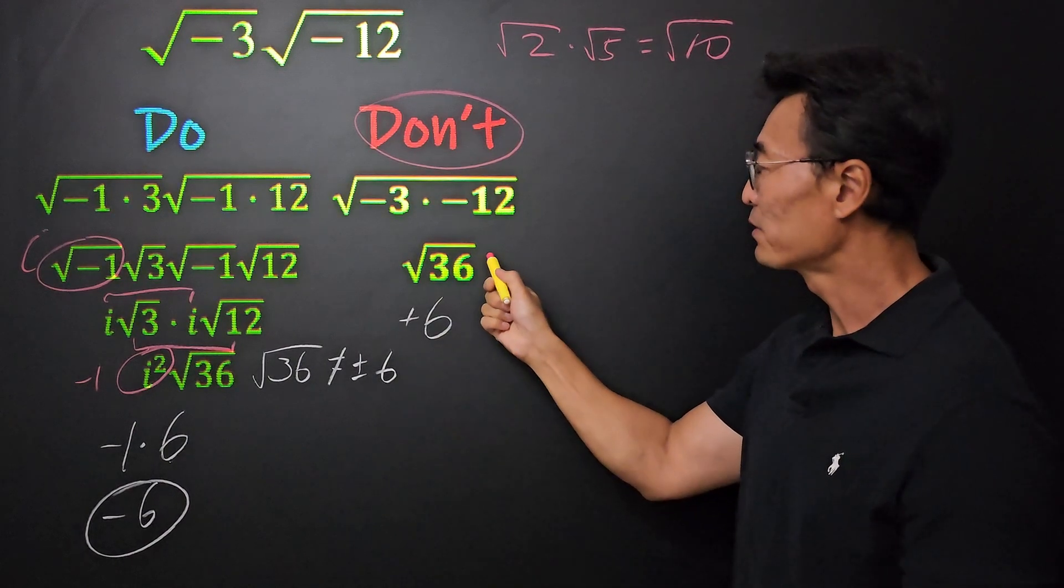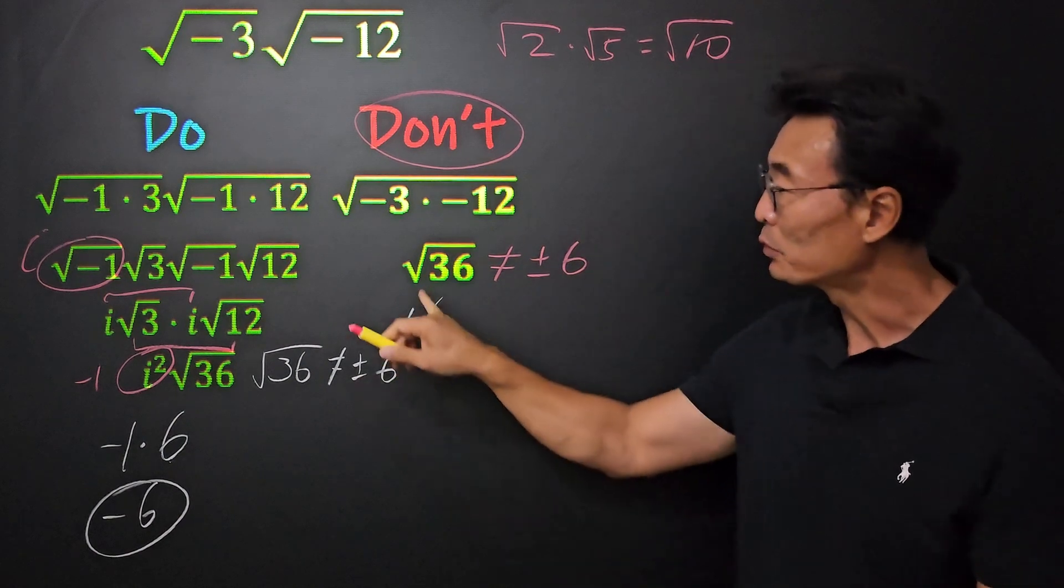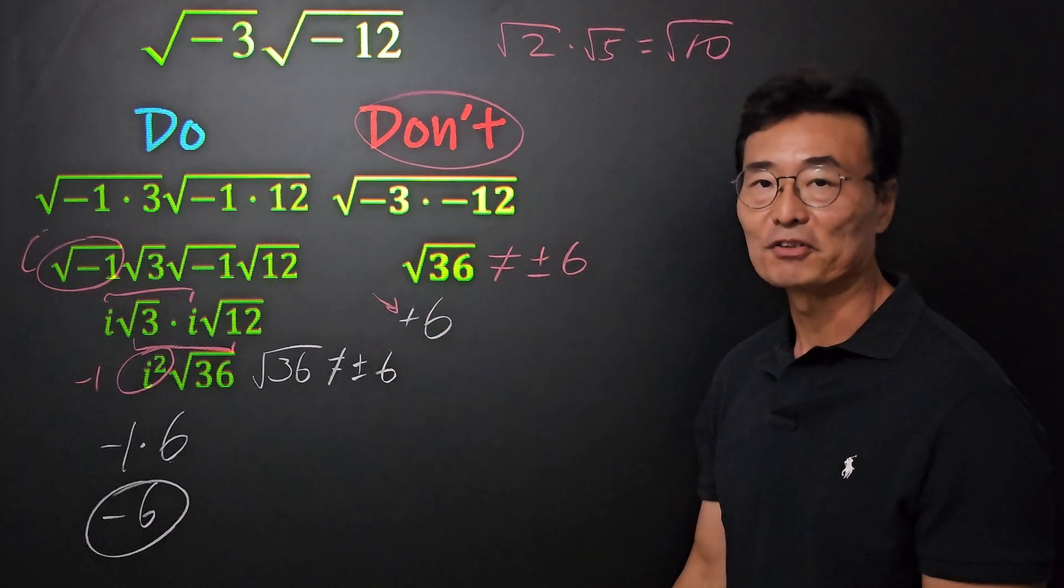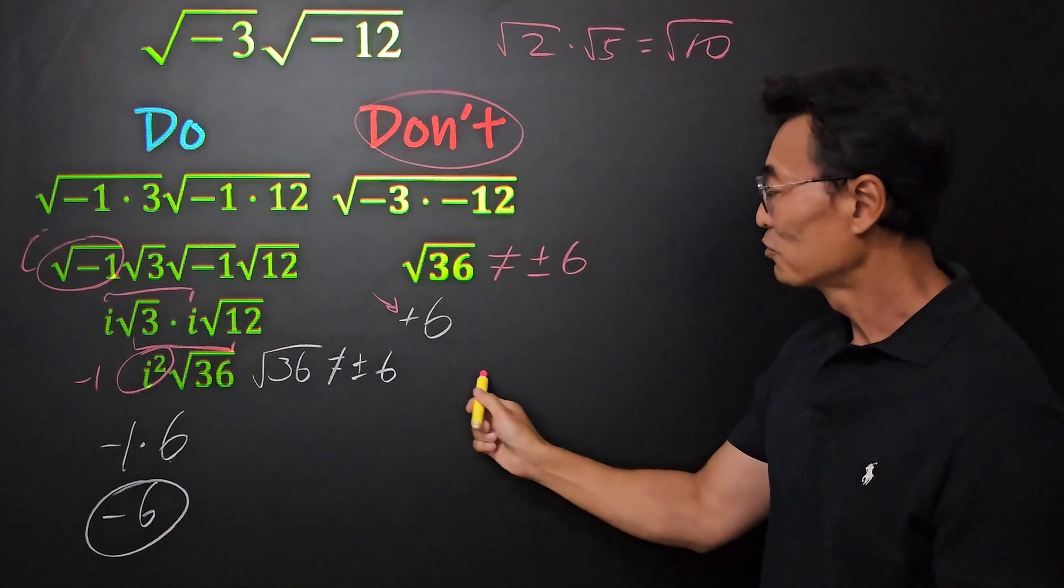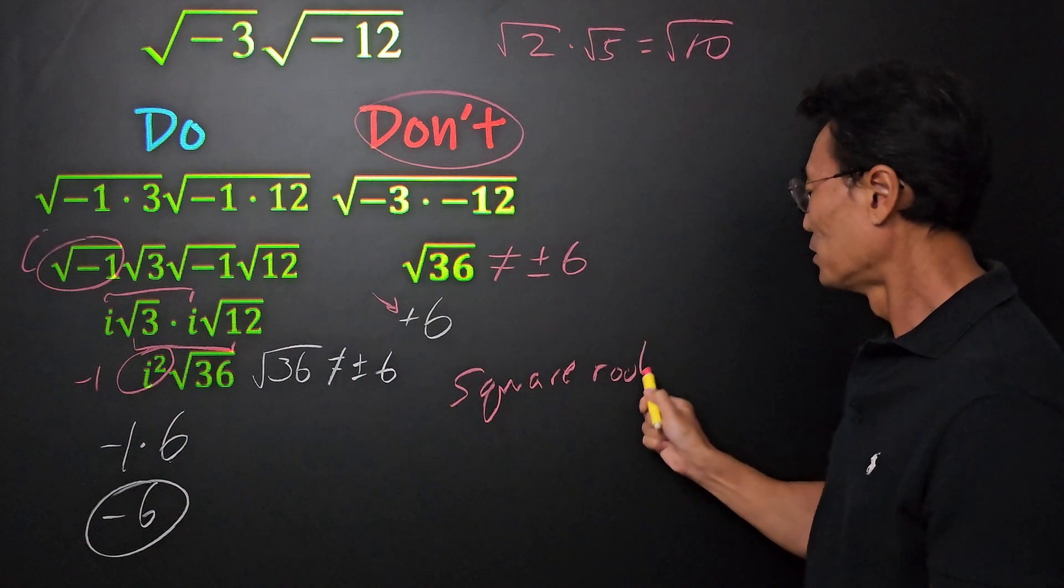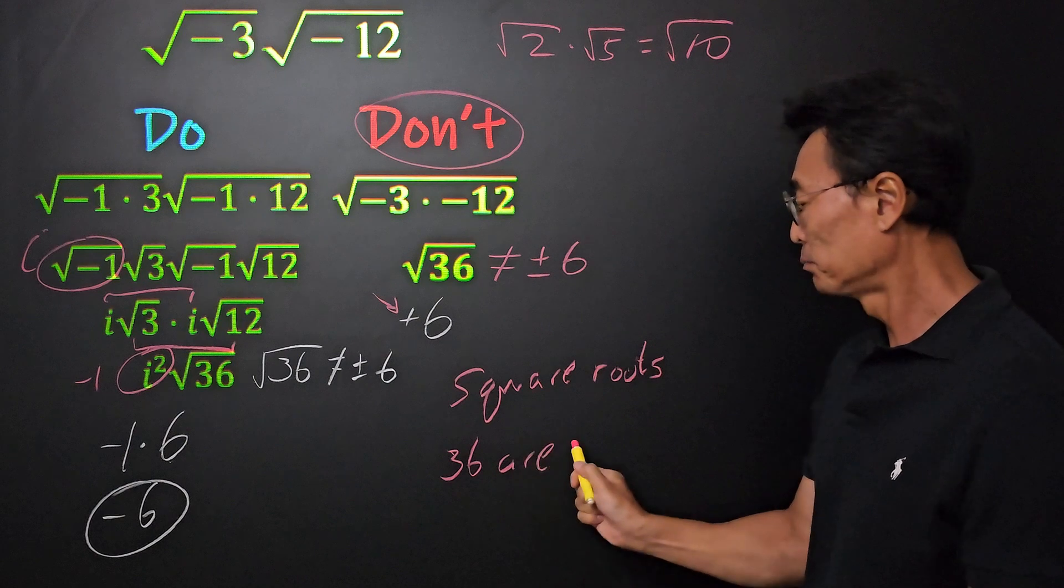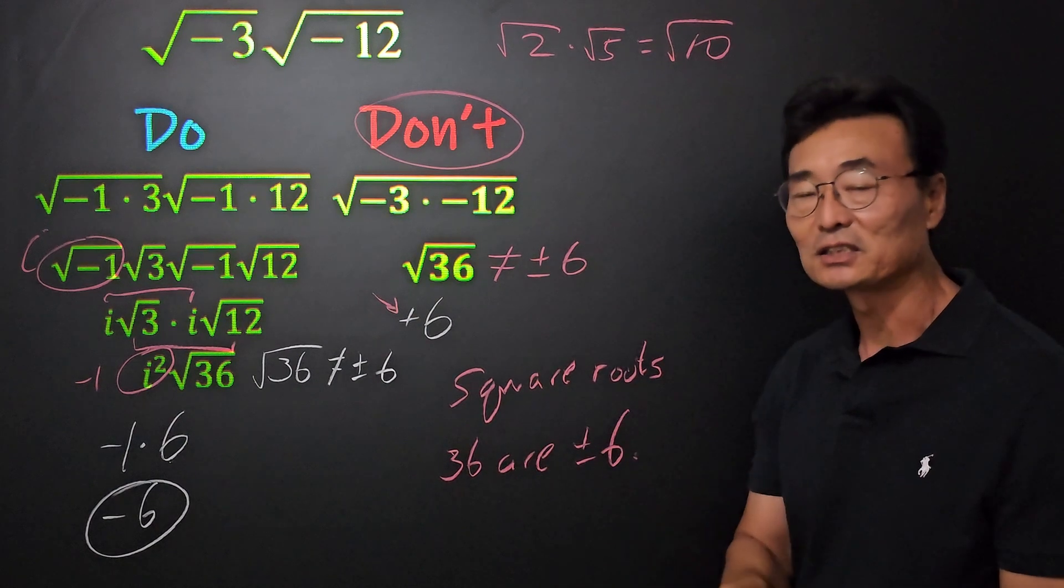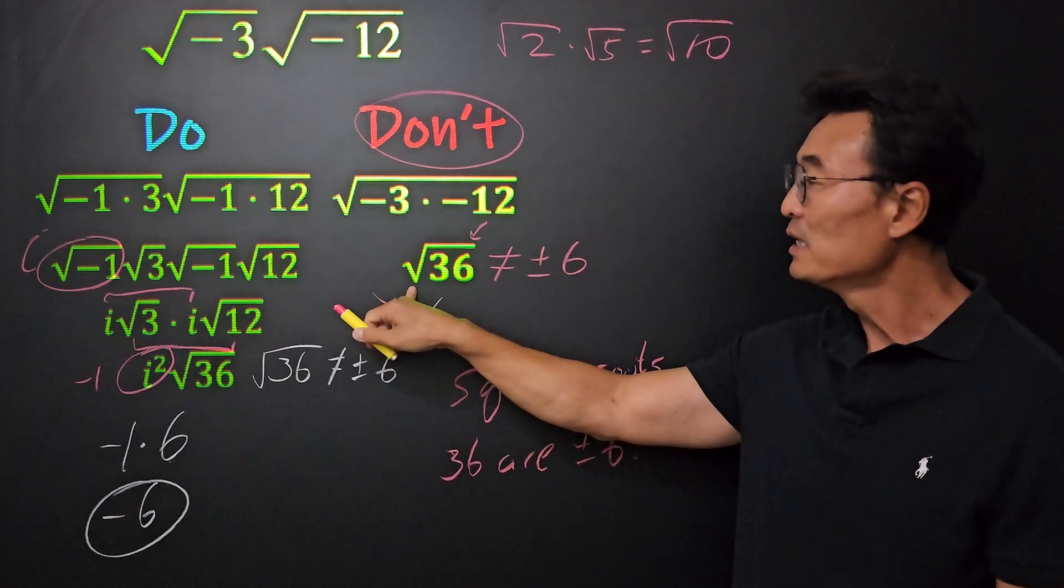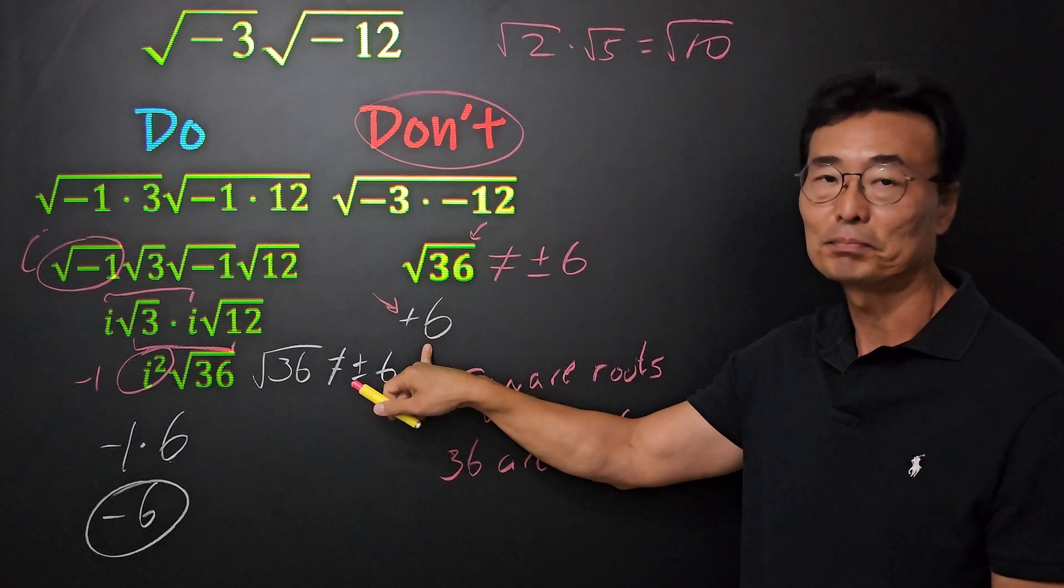Once again, square root of 36 does not equal plus minus 6 because when we're using that radical sign, we only use the positive root or the principal root. Yes, square roots of 36 are plus minus 6, I agree. That's correct. However, when we use that square root sign, the radical sign, then we only use the positive root again, the principal root.